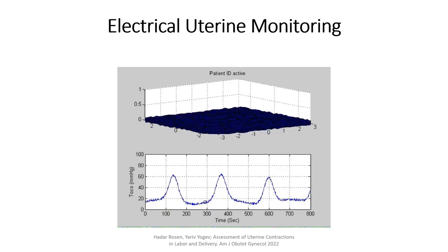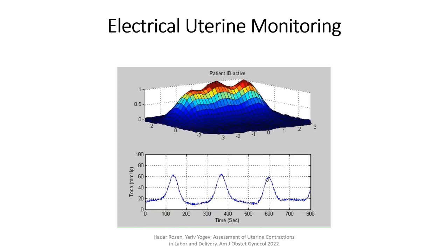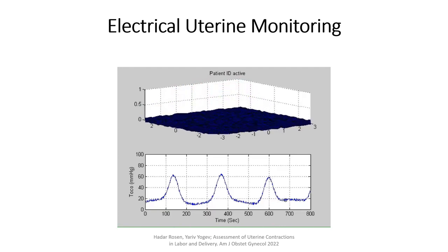On the bottom is the standard IUPC recording, and on the top, simultaneous electrical uterine monitoring is shown. The dot on the bottom tracing represents the point in time reflected on the top electrical uterine monitoring graph. In parallel to peak intrauterine pressure, pre-electrical myometrial activity is recorded.